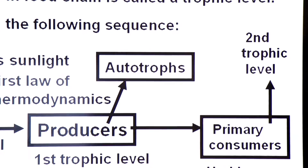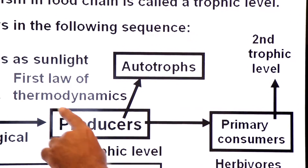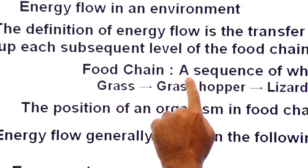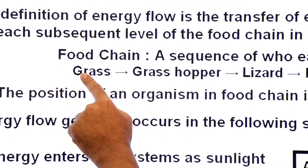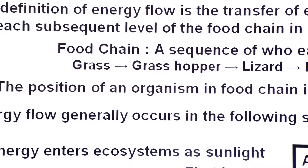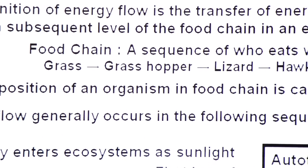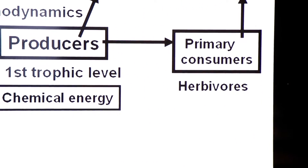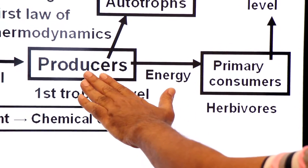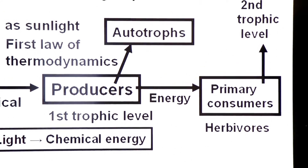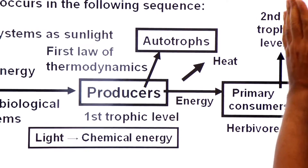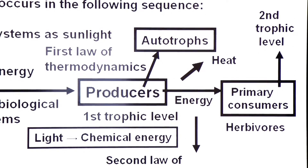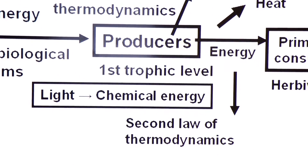Primary consumers occupy the second trophic level in the food chain. The grasshopper is the primary consumer — it is eating the grass, so grass is the producer and the grasshopper is the primary consumer. Now notice that energy is being transferred from the producer to the primary consumer, but 100% of the energy will not be transferred — some energy will be lost in the form of heat. This is governed by the second law of thermodynamics.